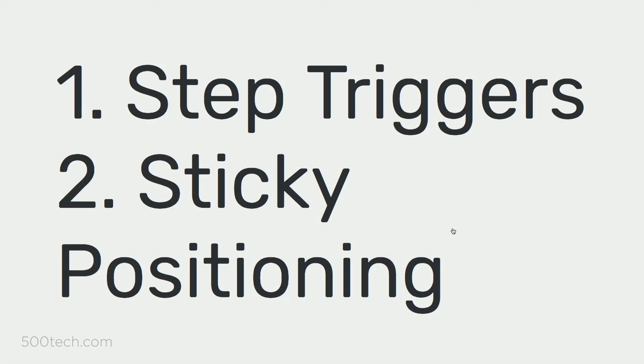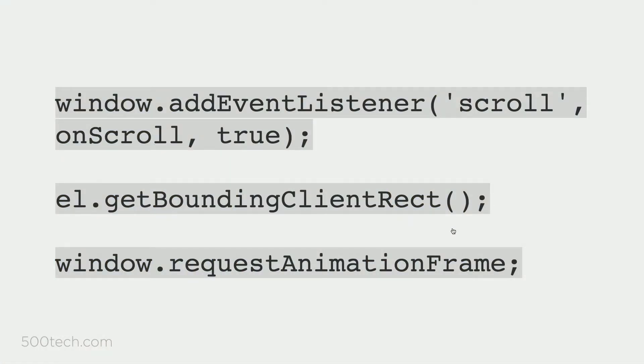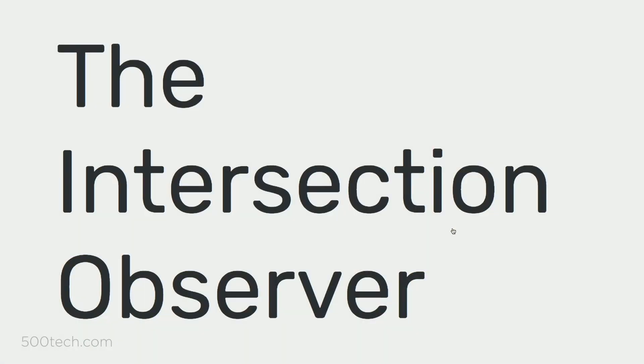So how do we actually implement scrollytelling in React? I'm going to split this into two sections: step triggers and sticky positioning. In the olden days of around 2015, what everyone would do is add an event listener or request an animation frame, loop through all your elements, and call a ton of getBoundingClientRect — that's how you'd get the information for scroll triggers. But this all runs on the main thread in JavaScript, and if you have a ton of elements like in that Pudding article, it's going to be slow and users will be frustrated.